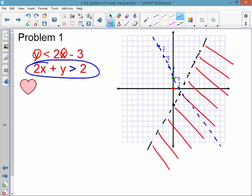And, once again, I'm going to test a point with 0, 0. I put 0 in for x and 0 in for y, and I get 0 is greater than 2. 0 is not greater than 2, so I shade the other side of the line.